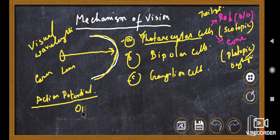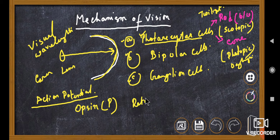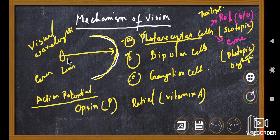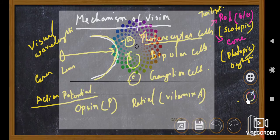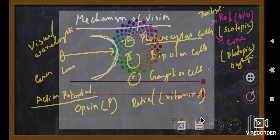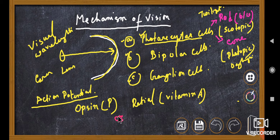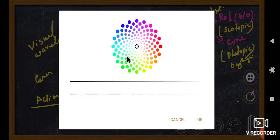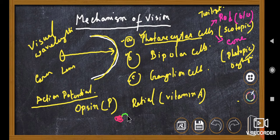Inside the photoreceptor cells there are two types of visual pigments. One is opsin, which is a protein, and another is the retinal pigment. Retinal is not a protein — rather it is a derivative of vitamin A. When a particular wavelength of light hits the photoreceptor cells, excitation occurs and an action potential is generated.